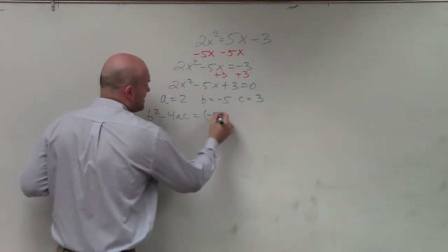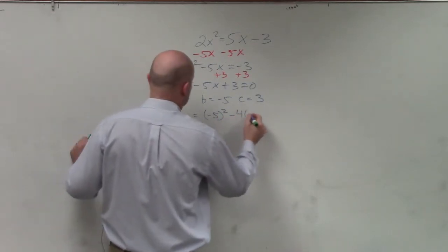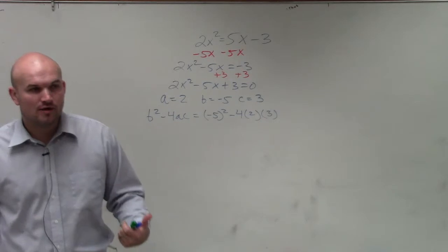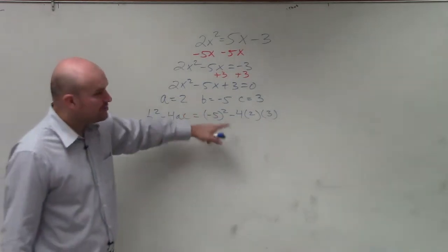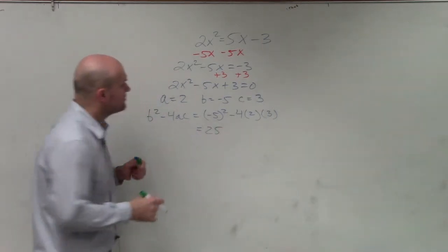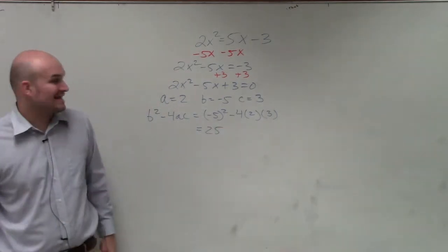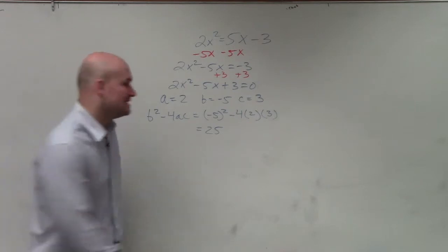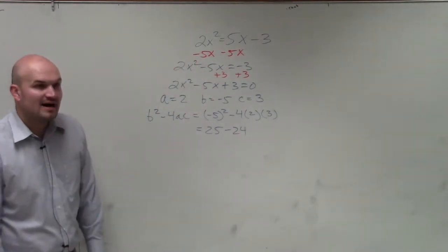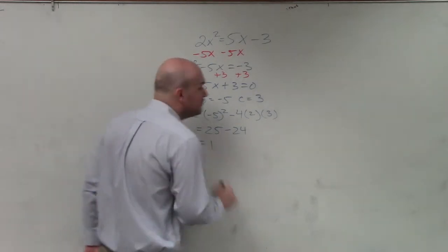Plug in my b. Notice how I'm using parentheses when I'm plugging in numbers. That just reminds me of what I'm doing. Well, b squared, or negative 5 squared, is negative 5 times negative 5, which is positive 25. Negative 4 times 2 is negative 8. Negative 8 times 3 is negative 24. So in reality, it's 25 minus 24, which is 1.